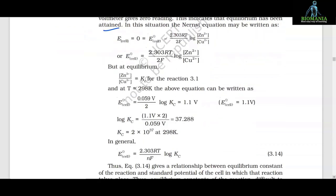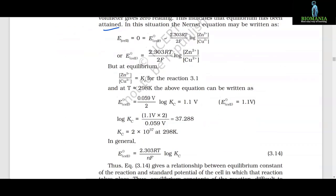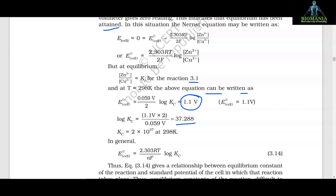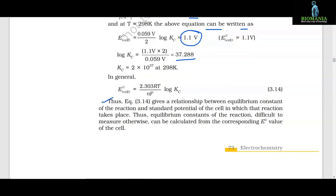After some time, there is no change in the concentration of Cu²⁺ and Zn²⁺ ions, and the voltmeter gives a zero reading — indicating that equilibrium has been reached. At this point, the Nernst equation gives E_cell = 0 = E°_cell − (2.303RT/2F) log([Zn²⁺]/[Cu²⁺]). At equilibrium, [Zn²⁺]/[Cu²⁺] = Kc. At T = 298 K: E°_cell = (0.059/2) log Kc = 1.1 V, giving log Kc = 37.288, and Kc = 2 × 10³⁷. In general, E°_cell = (2.303RT/nF) log Kc, which gives the relationship between equilibrium constant and standard cell potential.